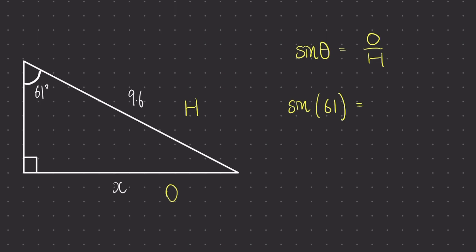In your calculator, when you type the sine button, it should come up with that open bracket already. On the other side of the equation, I don't know what the opposite side is in length, so we can keep that as x for now, and on the bottom of that fraction we can replace H with 9.6.